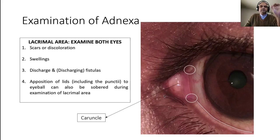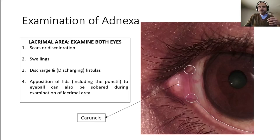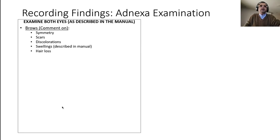Always be on the lookout, because your eyes cannot see what your mind doesn't know. The small structure seen medially is the caruncle — this is a normal structure. It's a small spot that people sometimes confuse for a growth, but it is present in everyone's eyes. You can observe this in others at home using a camera or torch.